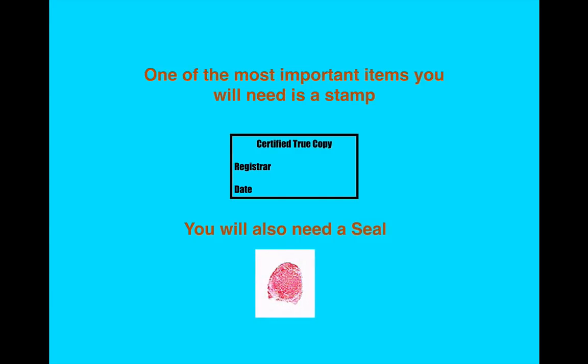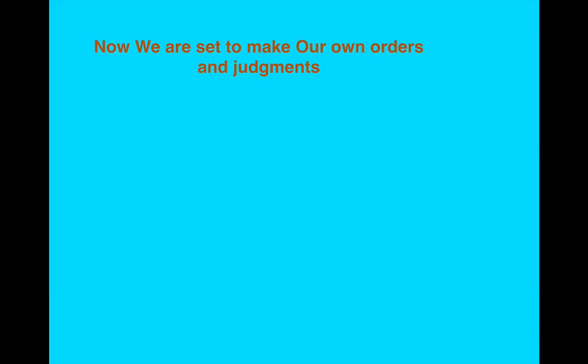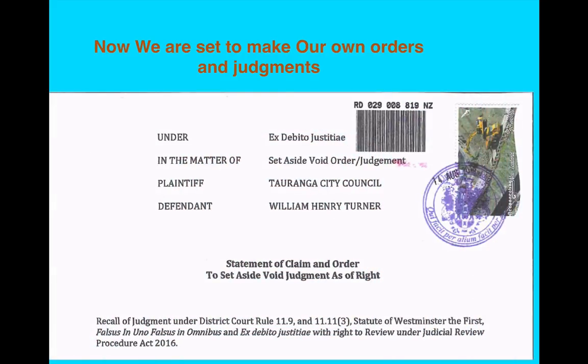You're also going to need a seal. The easiest seal is the thumbprint — I sometimes use my thumbprint, but I also have another seal which makes it more official looking, though that's only my personal way of doing things. Now we are set to make our own orders and judgments. Don't ever go to them asking them to do it for you — otherwise you're under their system. This is what we're trying to get out of now. We have to do all our own judgments, all our own paperwork; otherwise we're under their system.